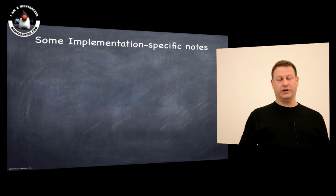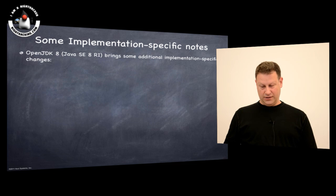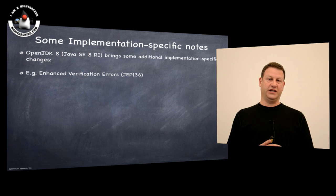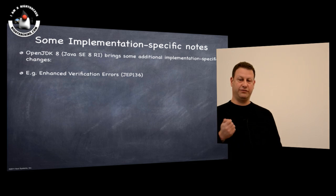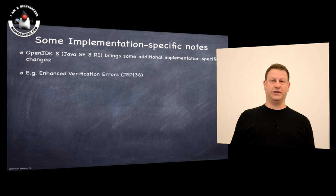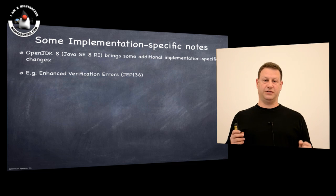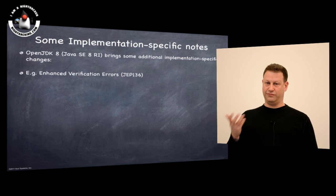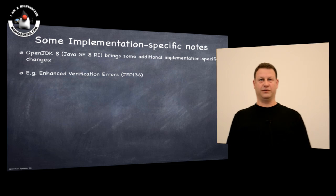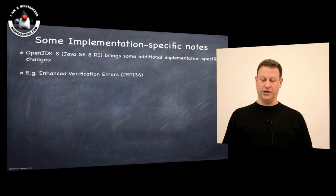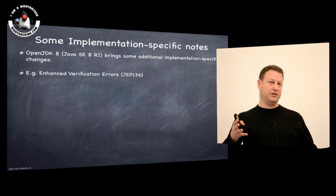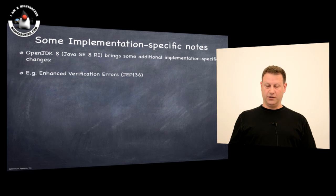Looking at some implementation-specific notes, OpenJDK adds much better verification error messages for the verifier. In previous versions, if you tried to load code that failed the verifier, the error messages were informative mostly for people who knew how the verifier was built, not very useful for people generating bytecodes. In the new version, the error messages are much better, so that people can understand what's wrong with their bytecodes when they fail to verify and load.